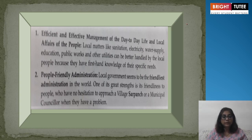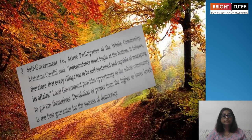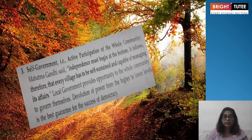Then there is people-friendly administration — people must feel easy approaching the administration to share problems. They should not hesitate to approach the village sarpanch or municipal councillor to discuss and find solutions. On self-government: Mahatma Gandhi said independence must begin at the bottom, and therefore every village must be self-sustained and capable of managing itself. If a village has hundreds of problems, it should be capable of solving them at its own level.